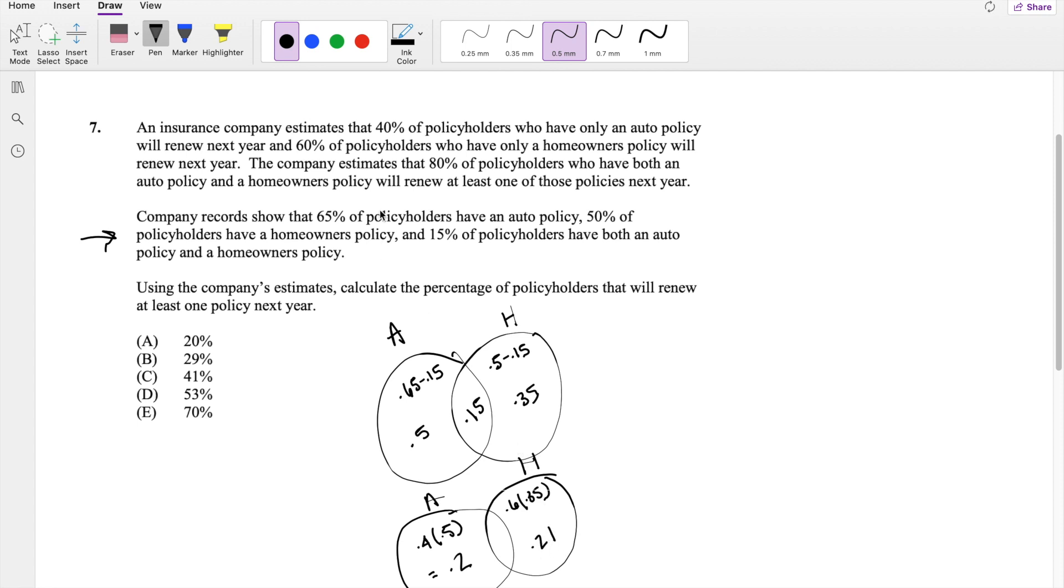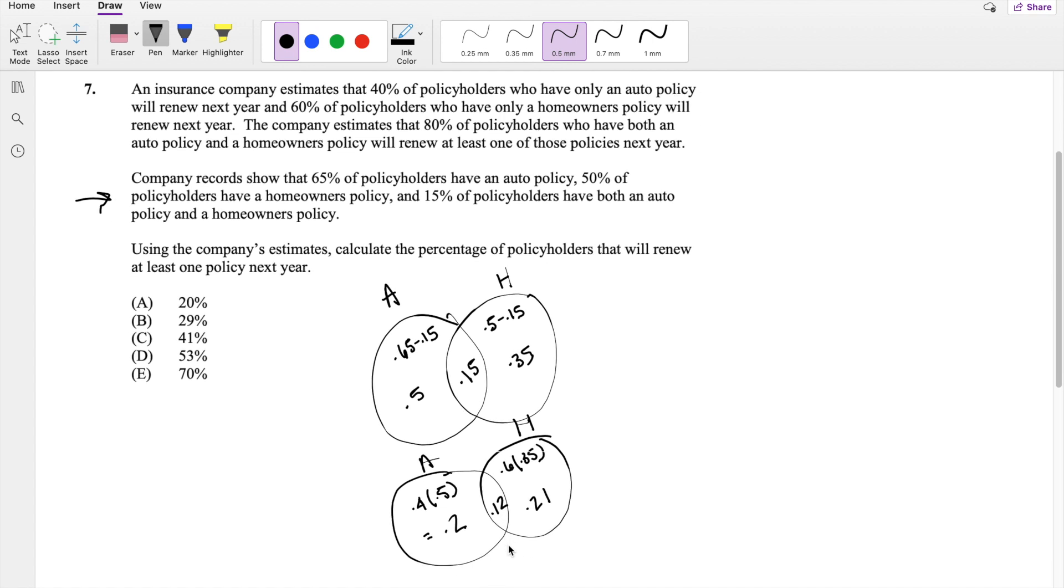And lastly here, they're saying 80% of policyholders who have both will renew, so 0.15 times 0.8 is equal to 0.12 will renew. So if we're looking for total percentage of policyholders that will renew at least one policy next year,